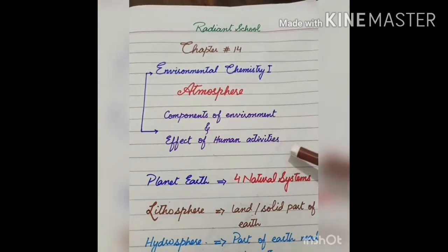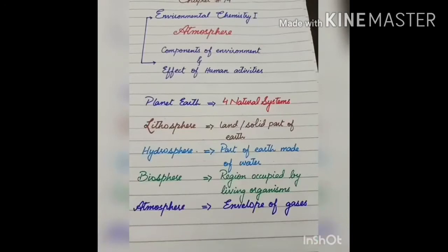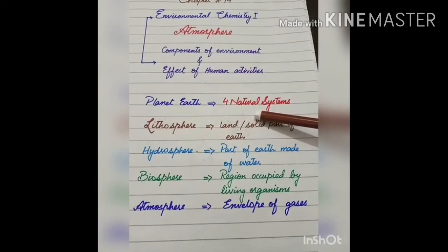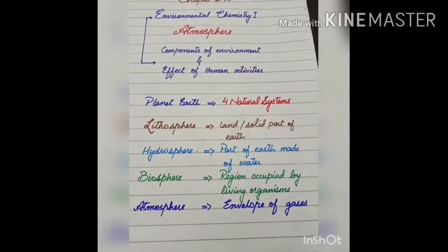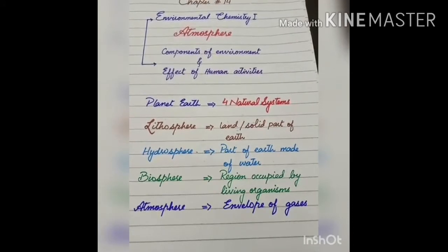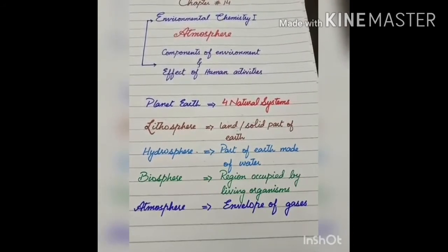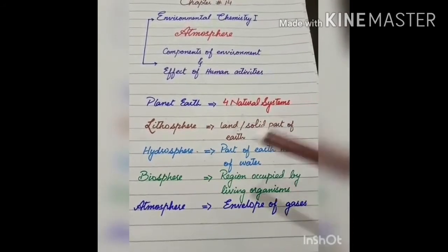Before the start of chapter, we should know something about our planet Earth. Our planet Earth is composed of four natural systems. The knowledge and understanding of these systems is very important for us to live on the earth.